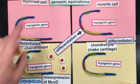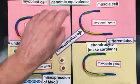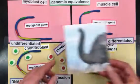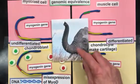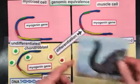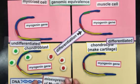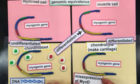That's really significant in the story of life on Earth. Genomic equivalence helps explain how we have such diverse animals — including animals who evolved muscles in their noses. The scientists also misexpressed MyoD in chondrocytes.